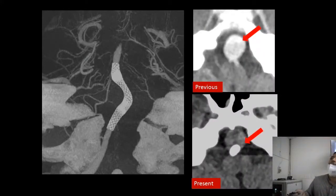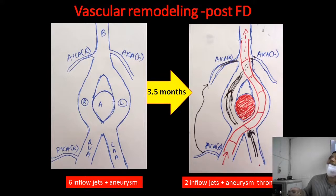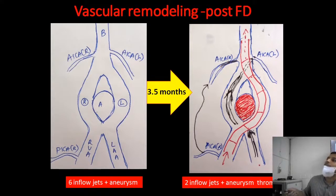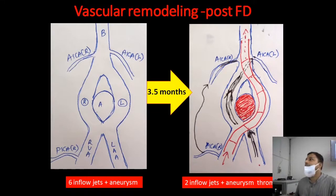DynaCT and axial post-contrast CT images confirmed that the previously brightly filling aneurysm is now completely excluded from the circulation. The vascular remodeling was remarkable: flow from the right vertebral artery now traverses through the left limb into the basilar artery, while from the left vertebral artery only the right limb and AICA are filling. We successfully converted 6 inflow jets into 2 inflow jets, with complete aneurysm thrombosis — a result beyond our expectations.